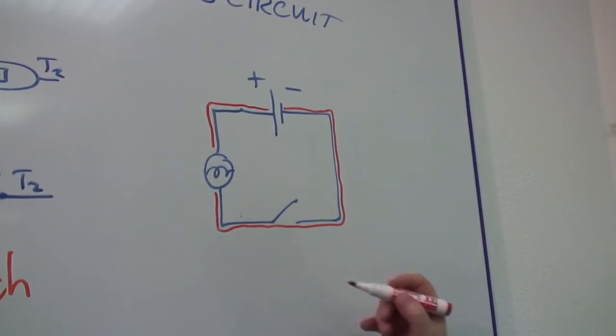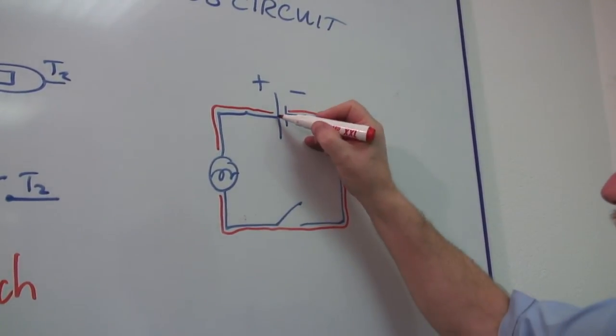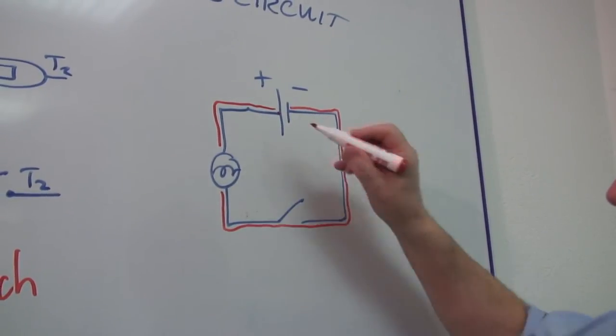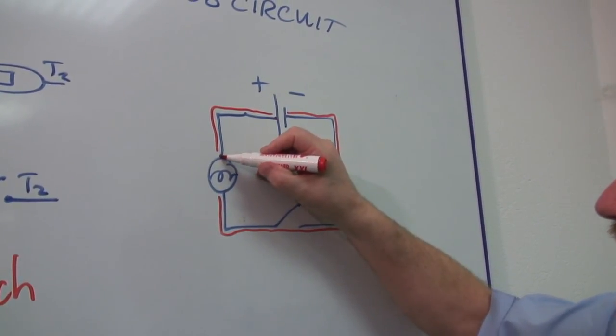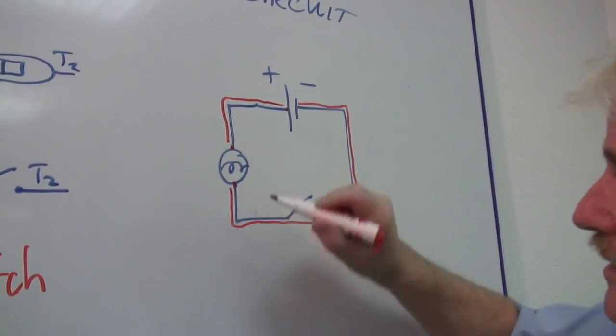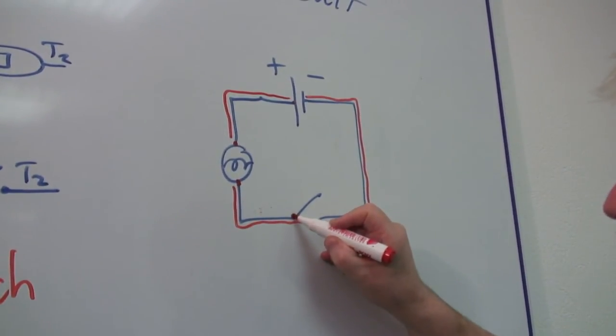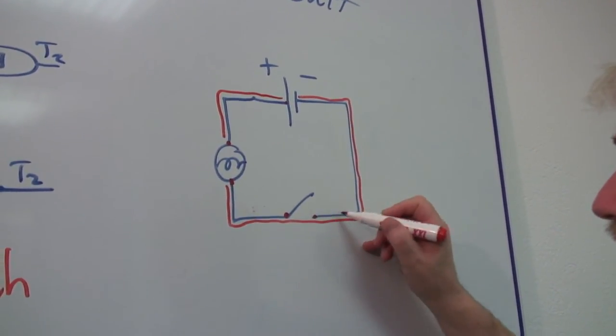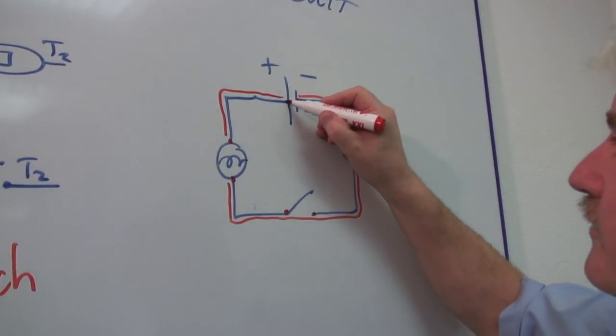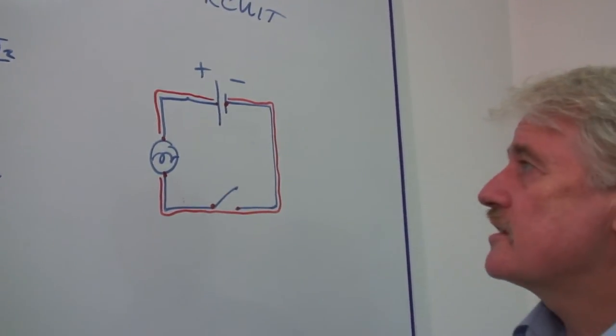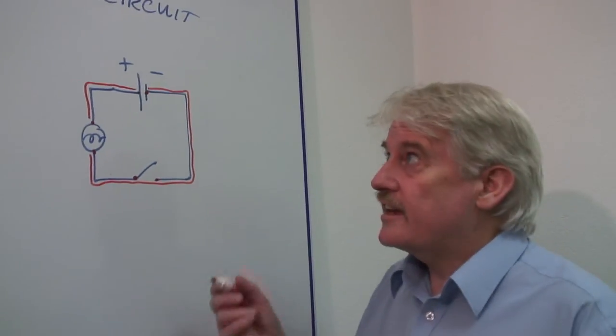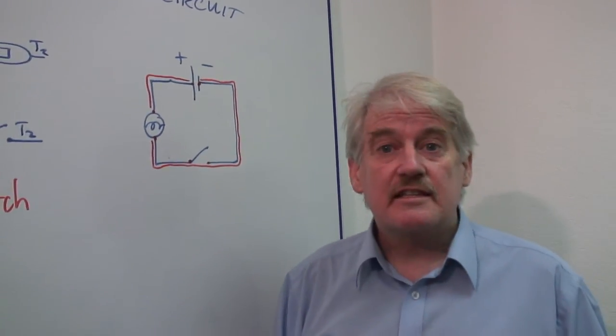So what I do is I connect one side of one component to the next component, the other side of that then to the final side of the first component I started with. So that is how to build a series circuit.